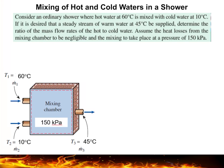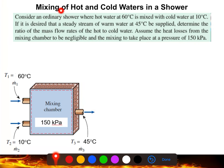We will solve a mixing problem involving hot and cold water in a shower. This is the mixing chamber — it has two inlets. Mass flow m1 and m2 are entering this way, with corresponding temperatures of 60°C and 10°C respectively. This is the outlet.